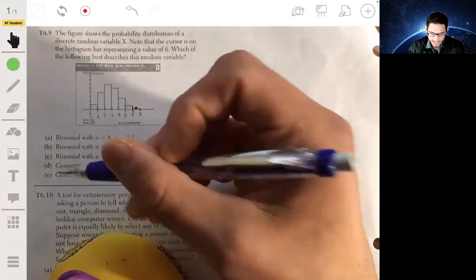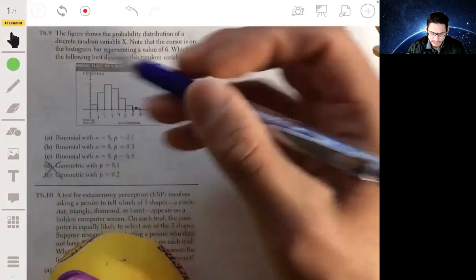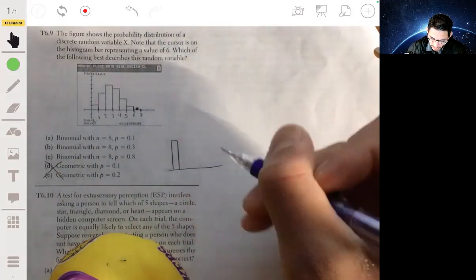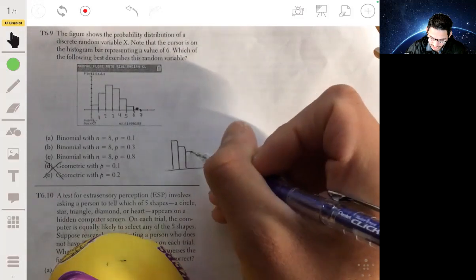Now we can say it's not geometric right off the bat because the geometric distribution follows a shape that basically is decreasing.